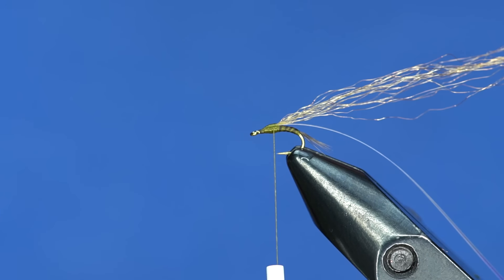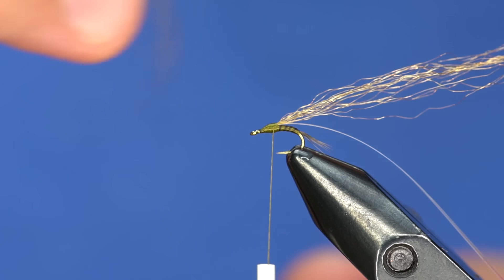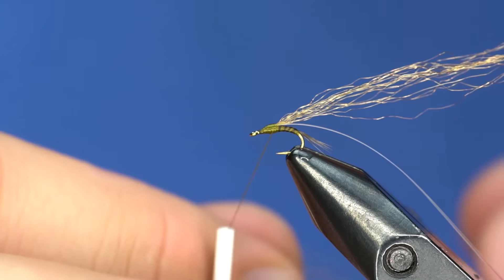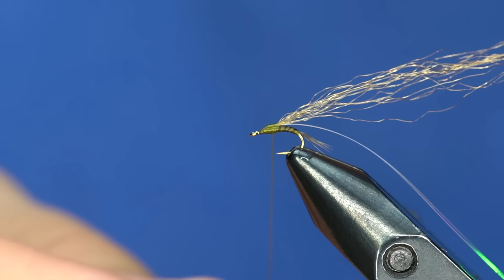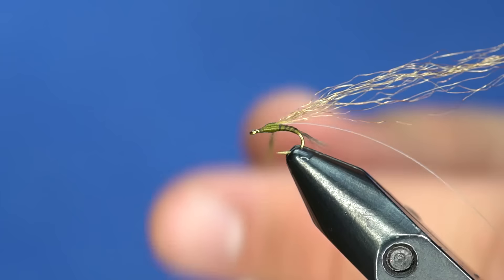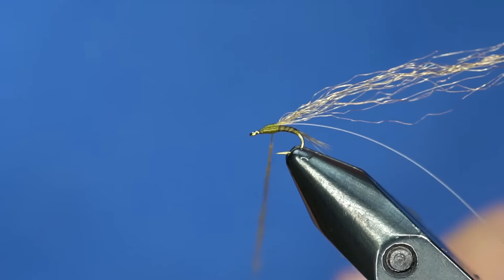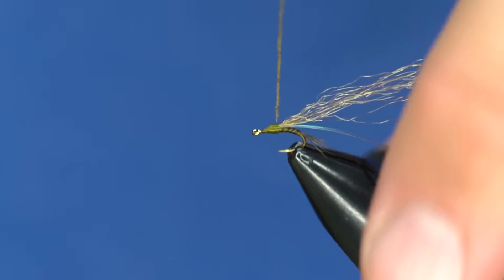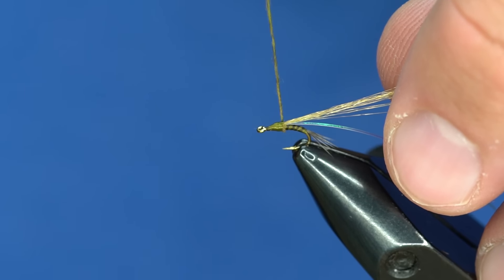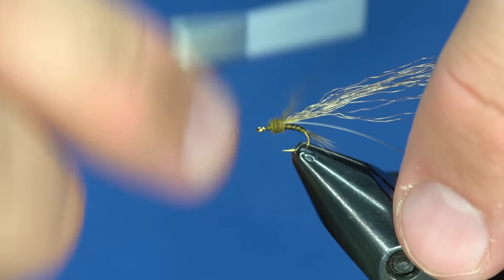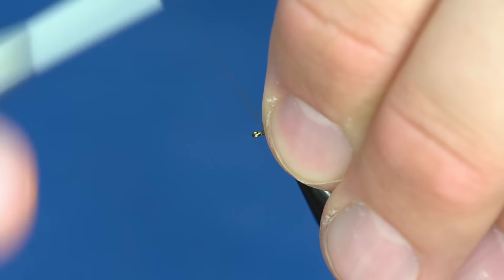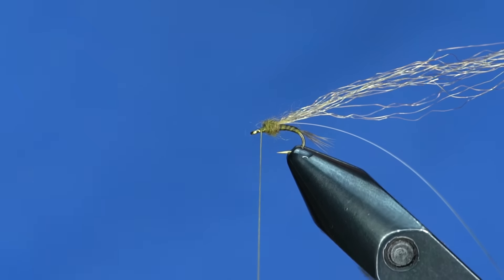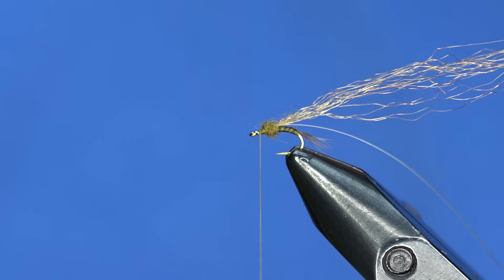Once we're here, I'm going to take some super fine dubbing and just barely any, like, that's how much I'm using. You just barely put enough on there to dirty up your thread. That's how much dubbing we have on the hook. It's just barely any. I want to wrap that up and leave quite a bit of room up in the front of the fly because we're going to build up kind of a pronounced head.